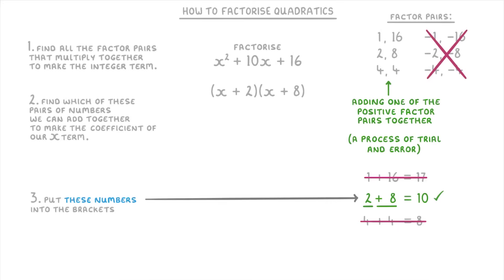If you want to be 100% sure that you've got the right answer though, we can multiply these two brackets together and they should equal our original quadratic. So for that we're going to do x times x which is x squared.